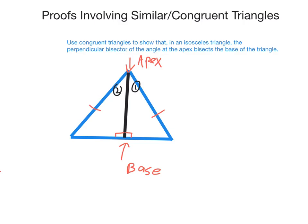If the two triangles are congruent, then those two sides will be equal. We first have to prove the triangles are congruent because those two sides will only be equal if they are. Looking at triangle one and triangle two, I'm going to label this triangle A, B, C, and call this point in the middle D. I want to show that these two triangles are congruent.